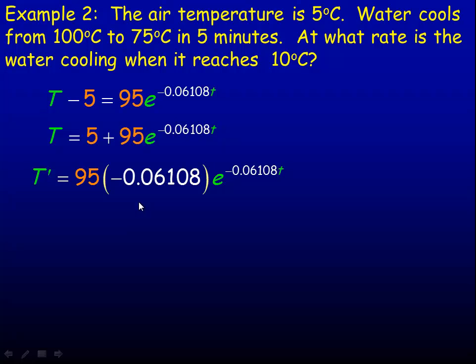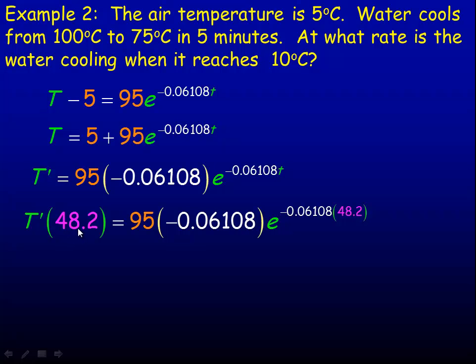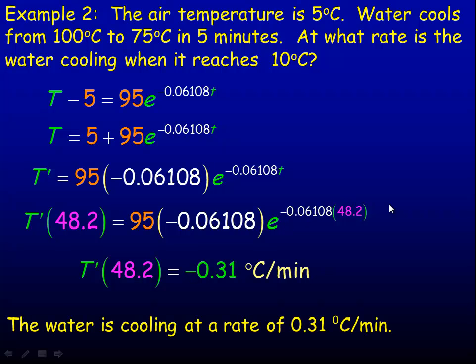We found it took 48.2 minutes to reach 10 degrees, so we substitute t equals 48.2 into the derivative. Evaluating 95 times negative 0.06108 times e to the power, we get about negative 0.31. The negative rate means the temperature is going down, as expected. The water is cooling at a rate of 0.31 degrees Celsius per minute. That's the end of the example.